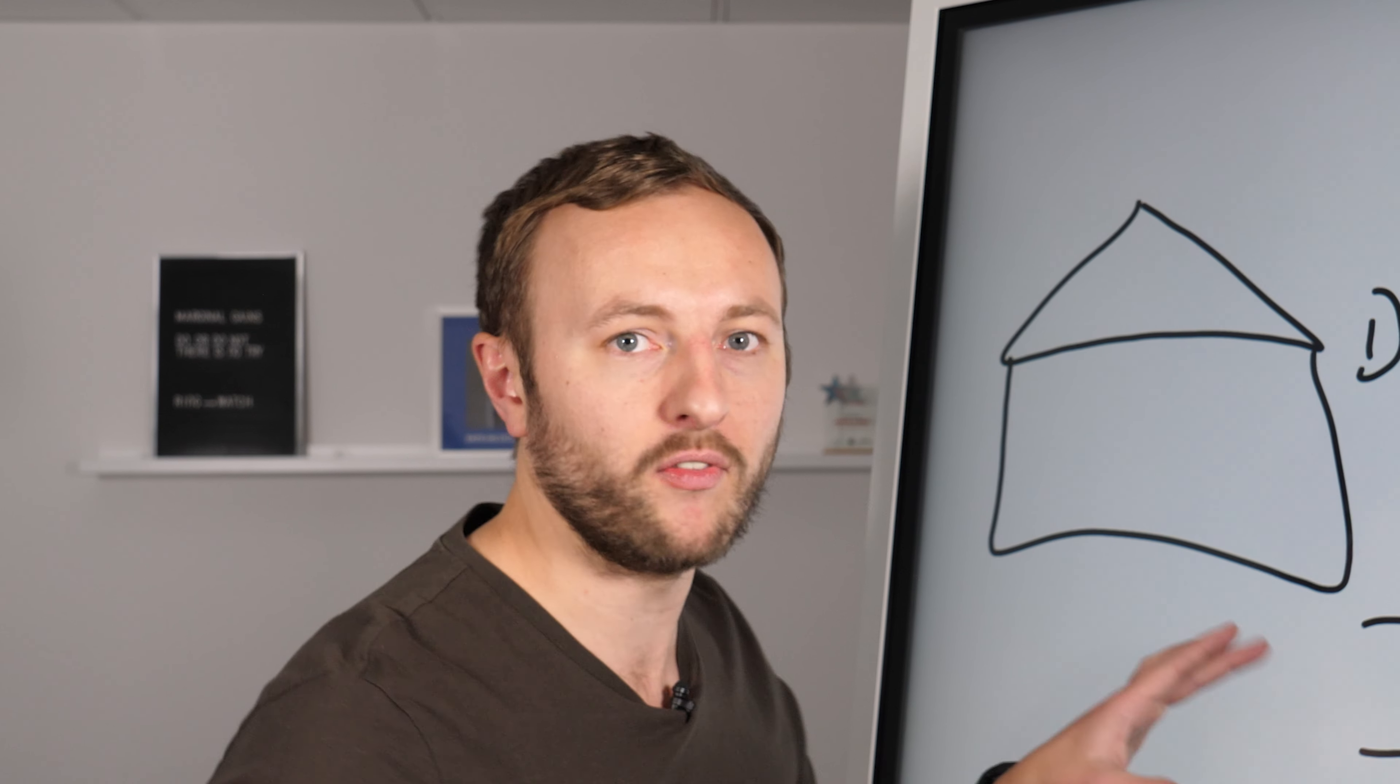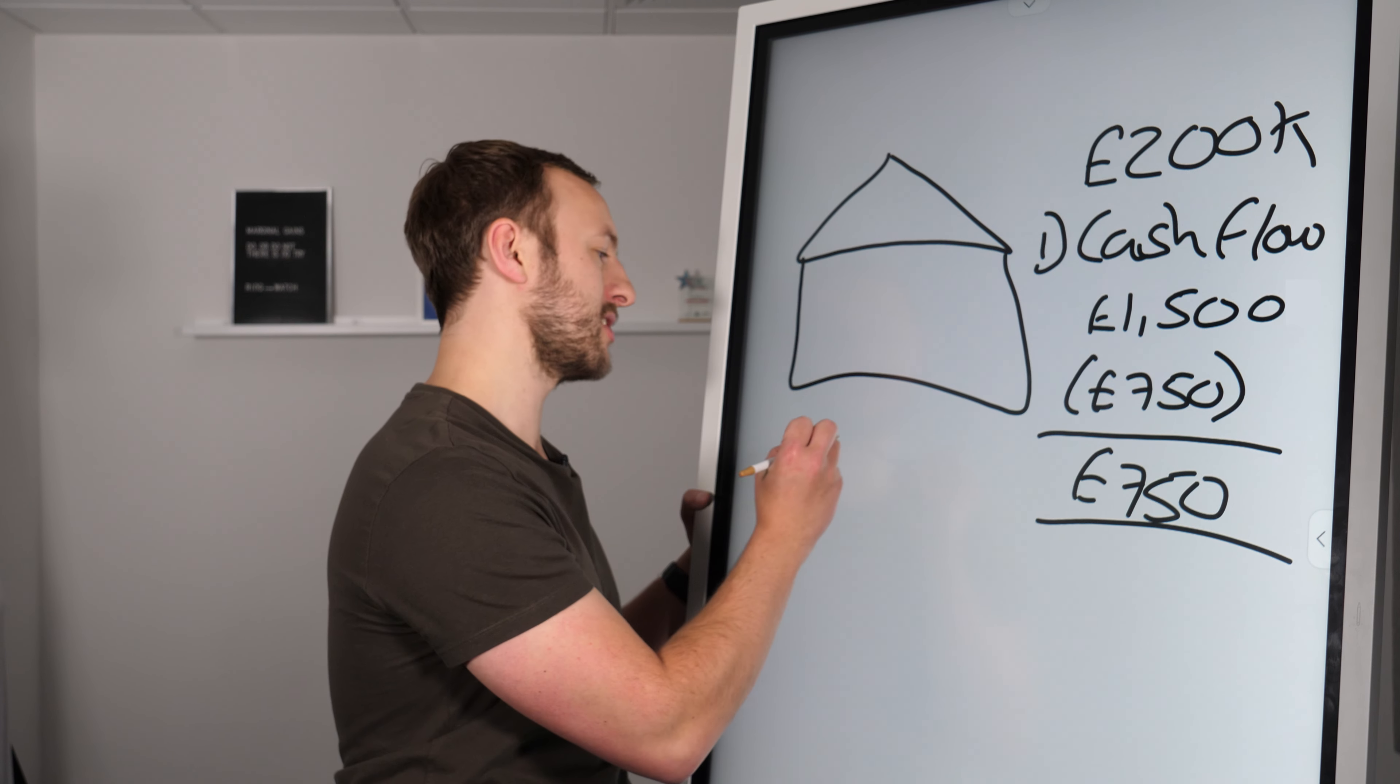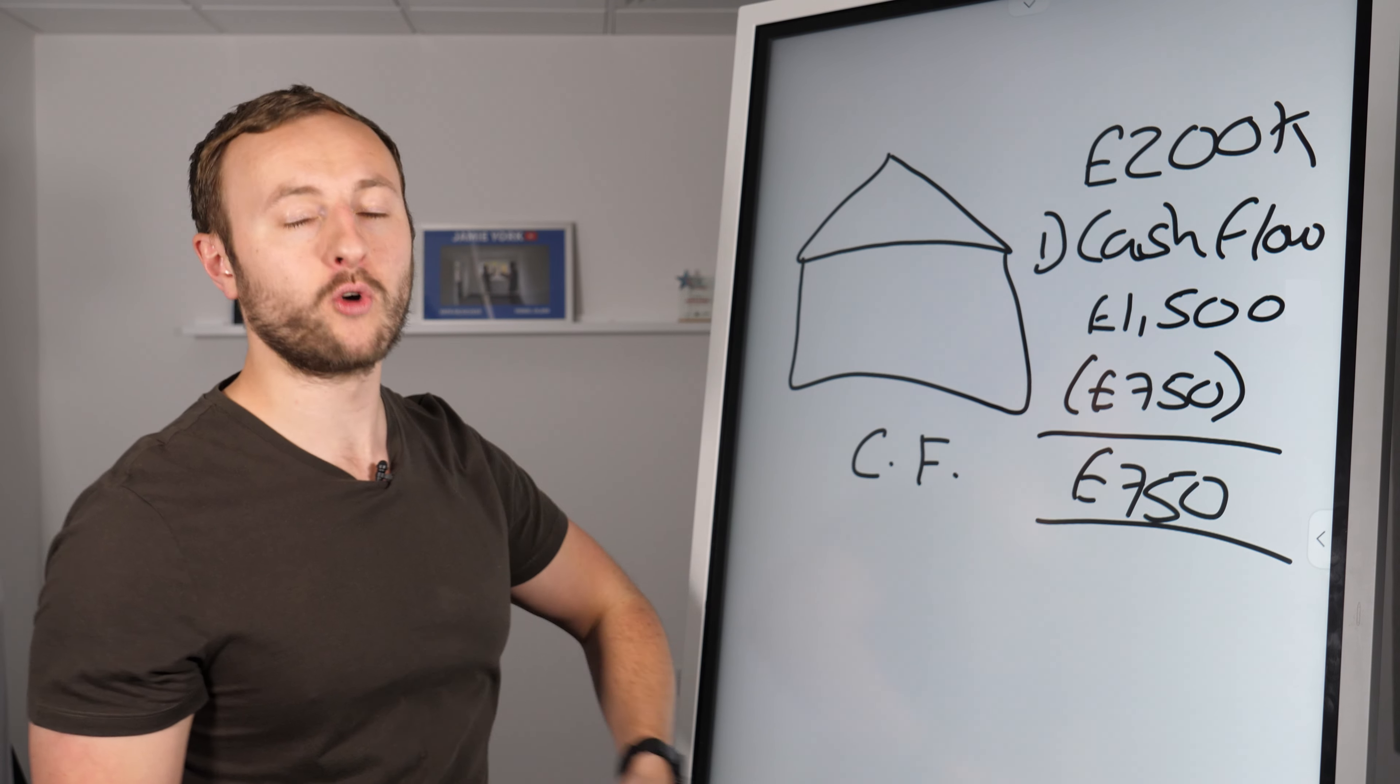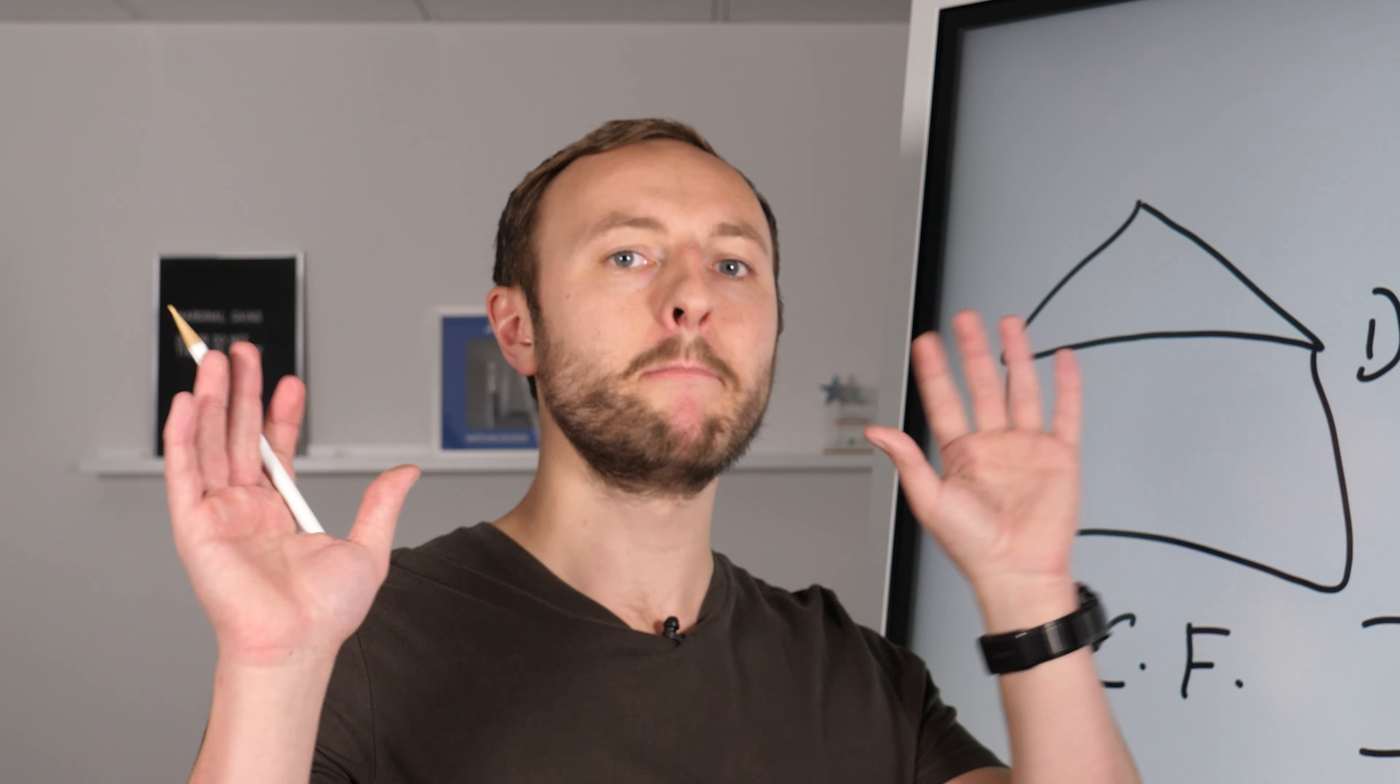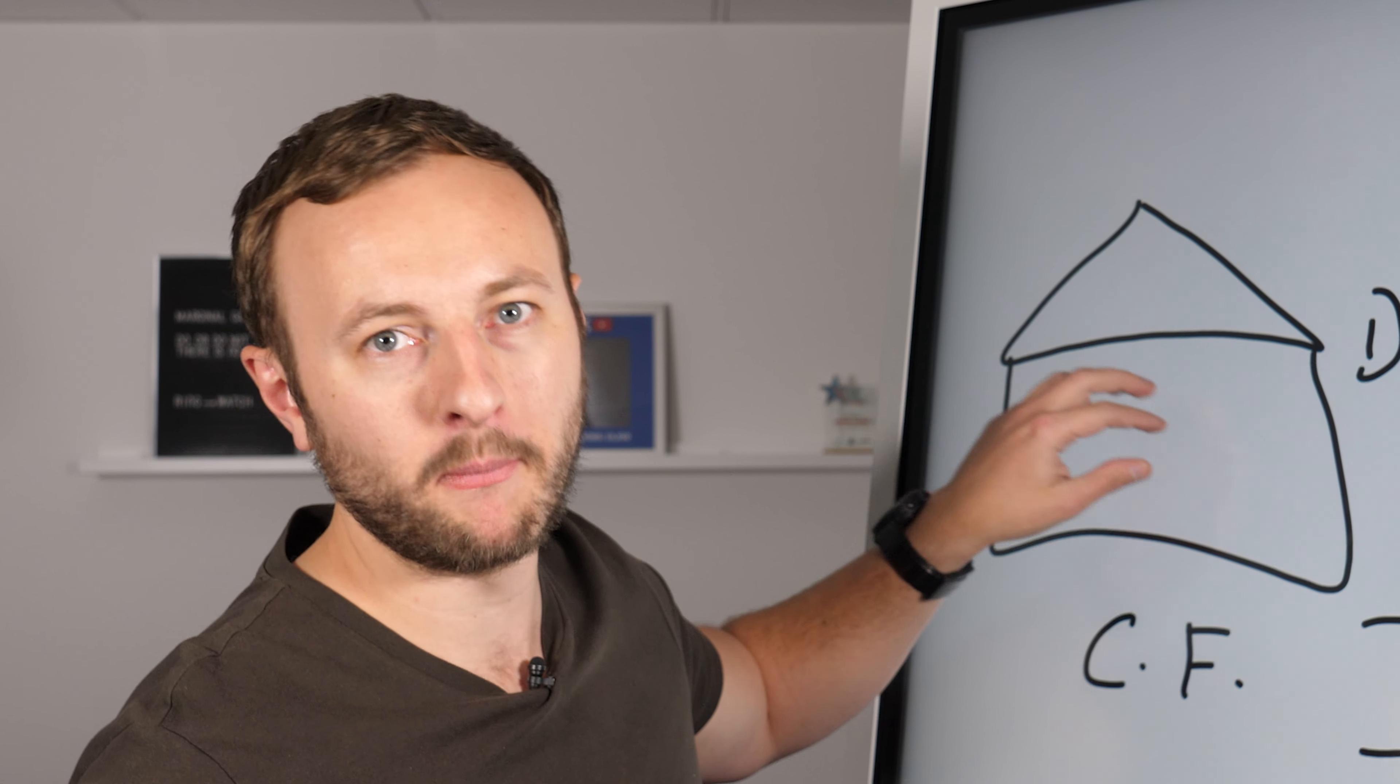That number that is coming into your bank, net of all of those things, is called cash flow. So cash flow, the monthly recurring passive income that comes from your property that has become an asset.